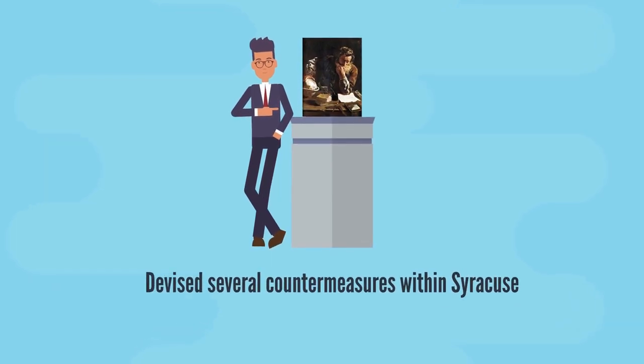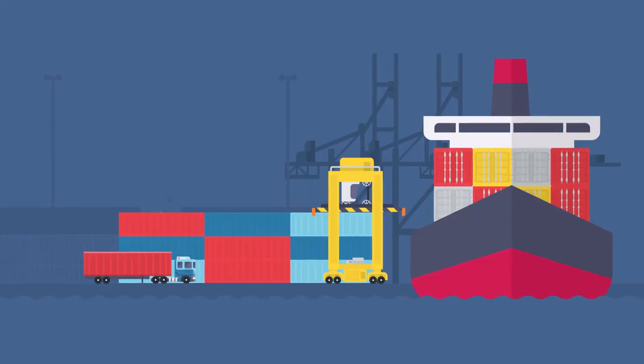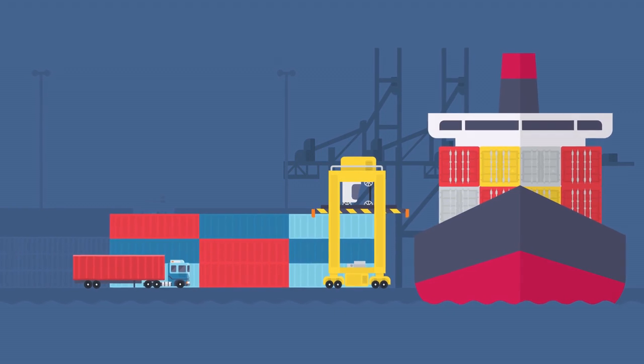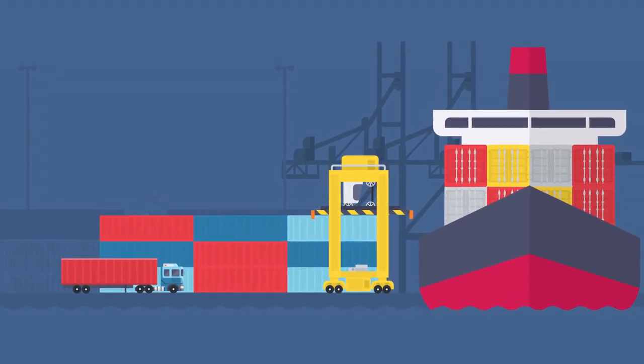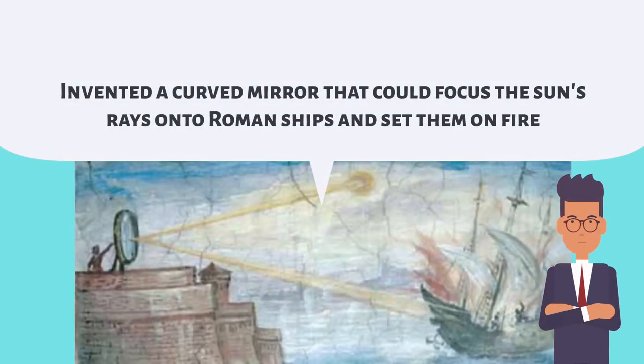Archimedes devised several countermeasures within Syracuse. One was a powerful hook mounted on a rotating crane that could lift and capsize Roman ships. He is also said to have invented a curved mirror that could focus the sun's rays onto Roman ships and set them on fire.